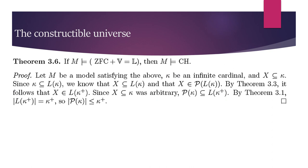If M models ZFC + V=L, then M models CH. Let M be a model satisfying the above. Let kappa be an infinite cardinal and X a subset of kappa. Since kappa ⊆ L(κ), we know X ⊆ L(κ), and X ∈ P(L(κ)). By Theorem 3.3, it follows that X ∈ L(κ⁺). Since X was arbitrary, P(κ) ⊆ L(κ⁺). By Theorem 3.1, |L(κ⁺)| = κ⁺. So |P(κ)| ≤ κ⁺.